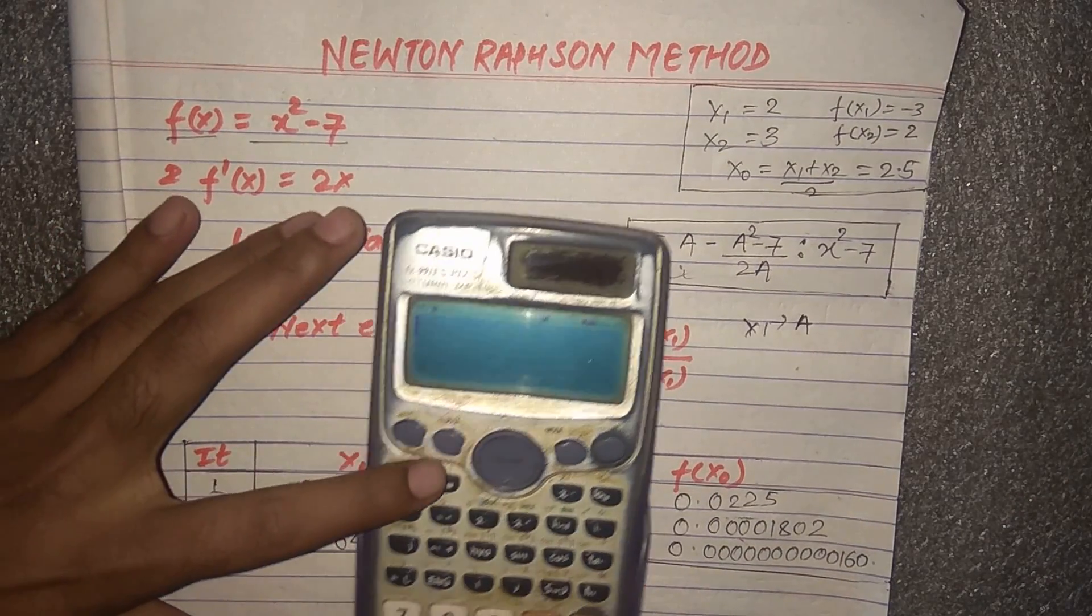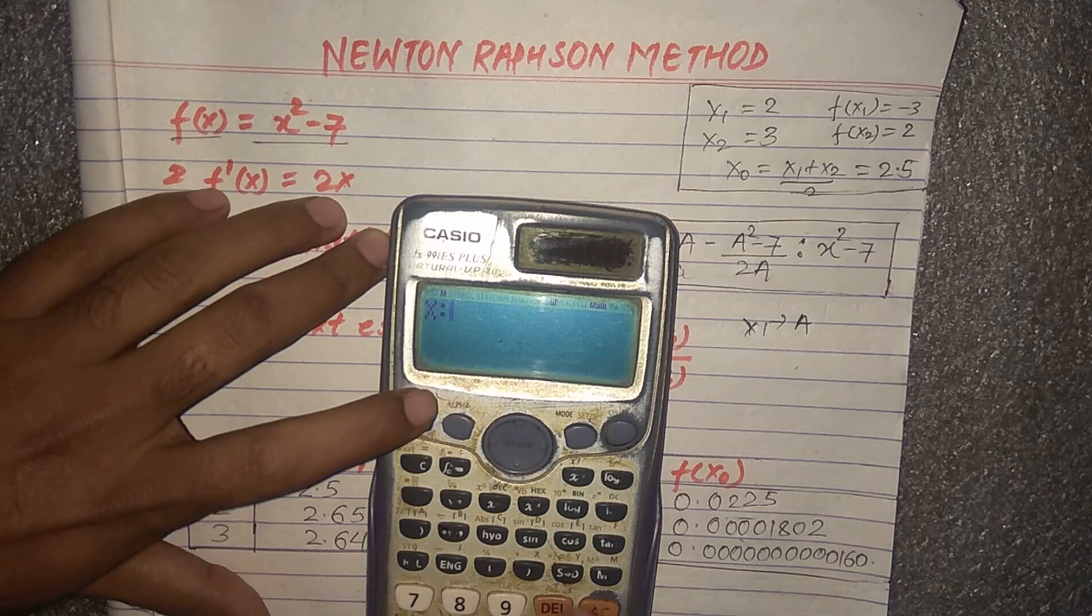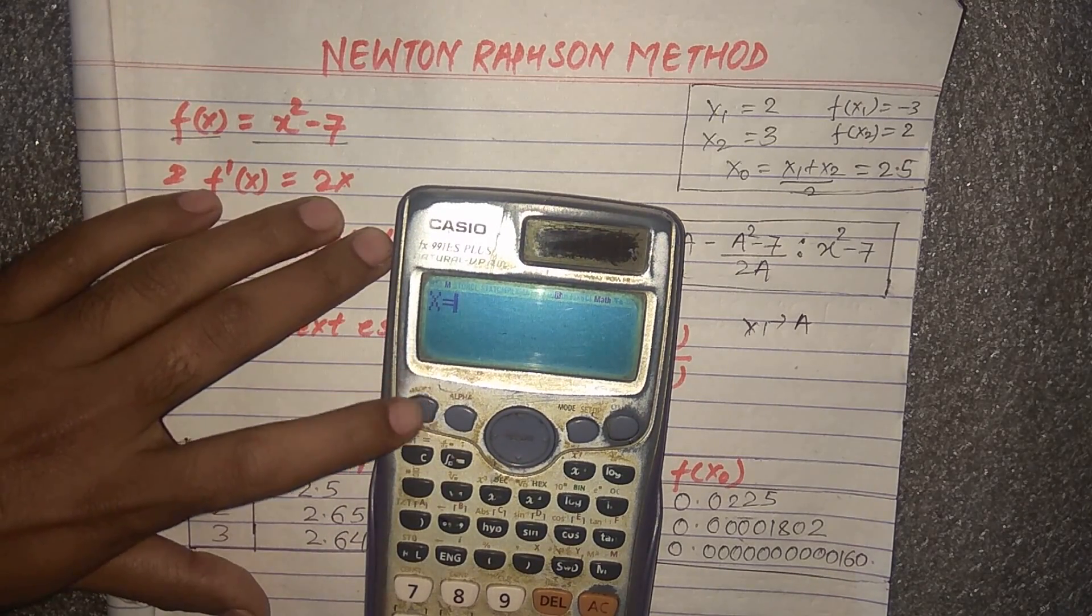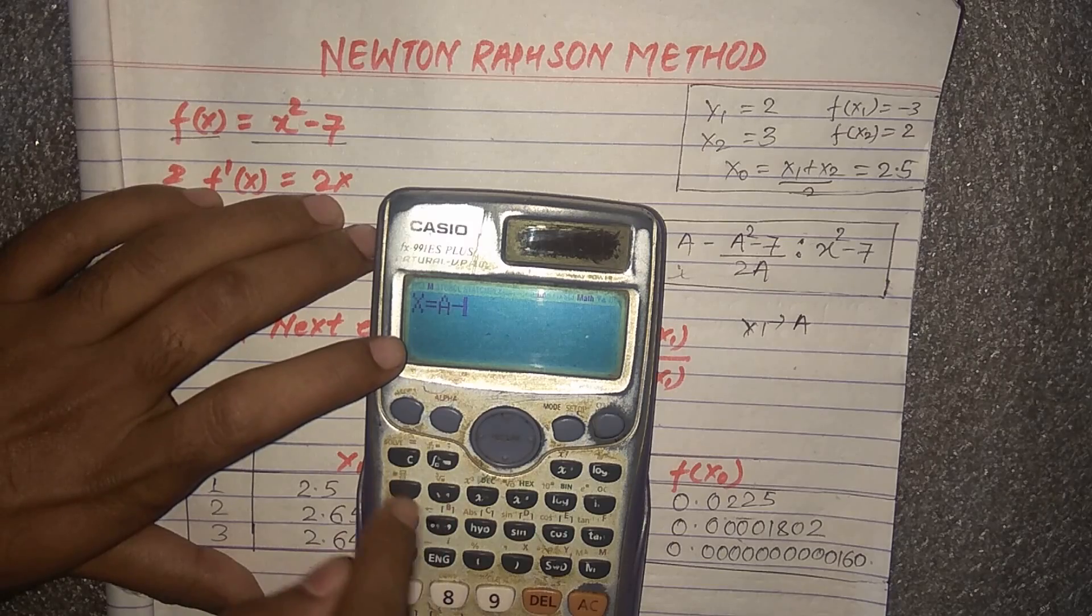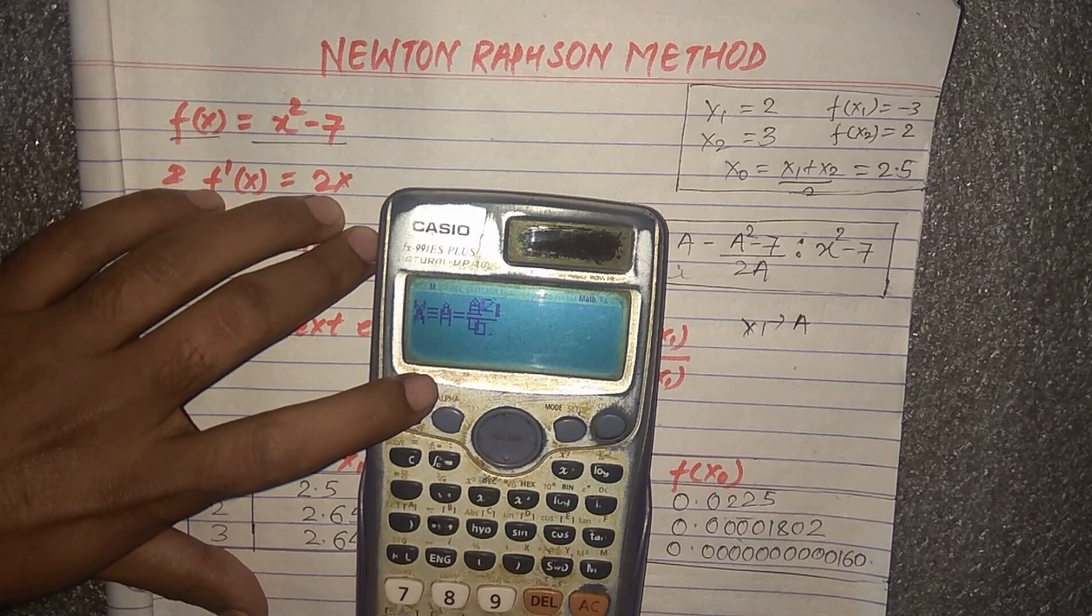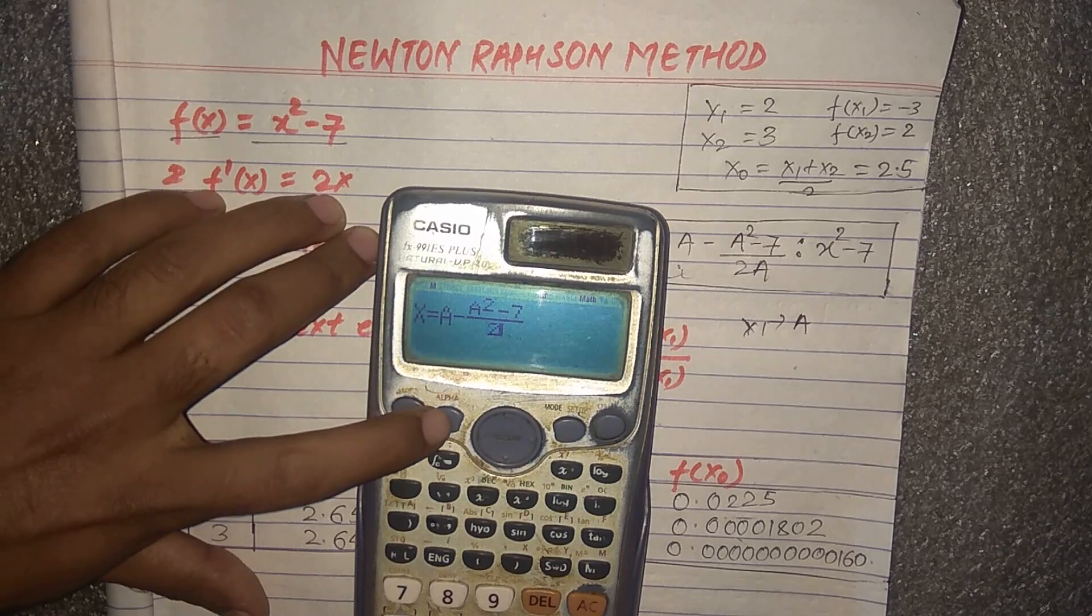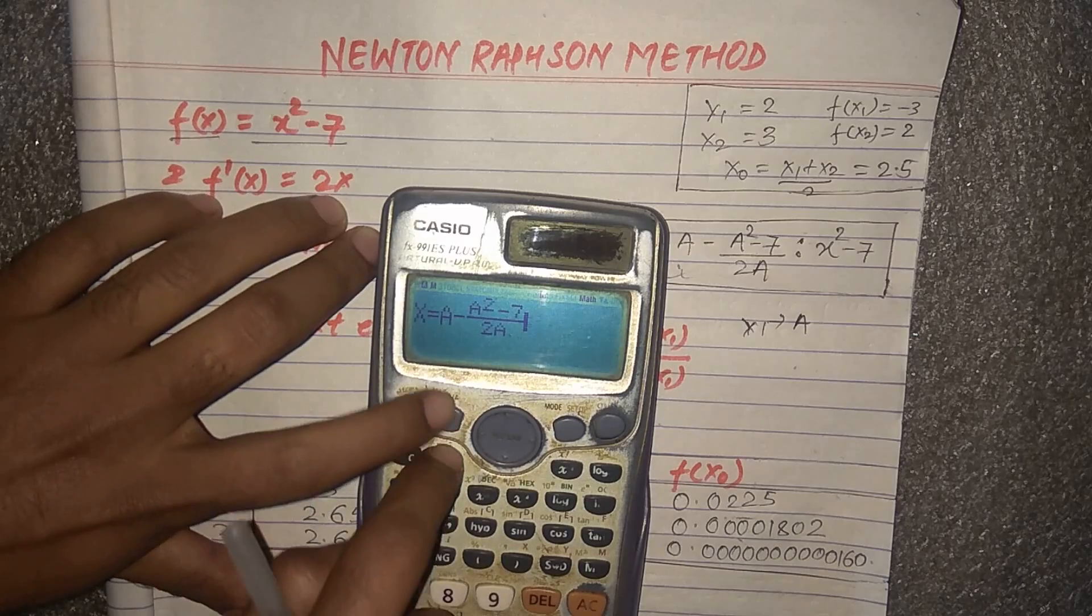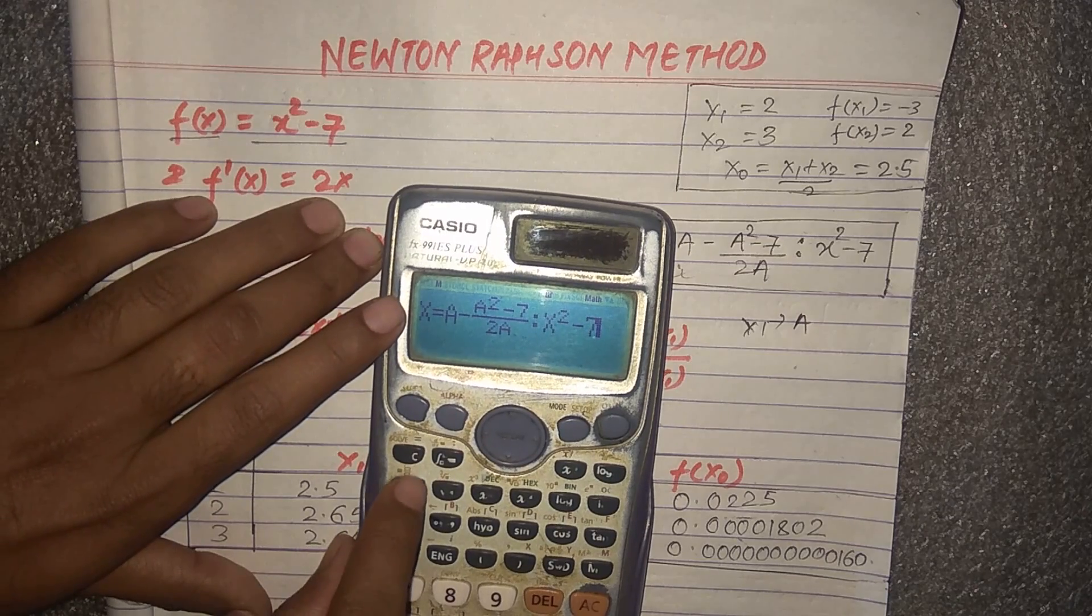Here: alpha x shift equals alpha a minus alpha a squared minus 7 upon 2 alpha a, such that x² - 7, and then press calc.